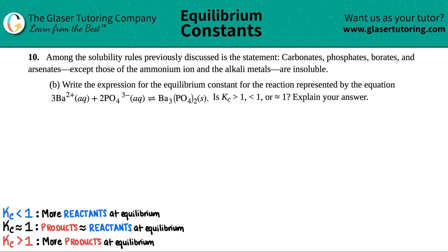So then we have letter B. Write the expression for the equilibrium constant for the reaction represented by the equation, and then we have this one: 3Ba2+ plus 2PO4 3- aqueous will yield us barium phosphate Ba3(PO4)2.